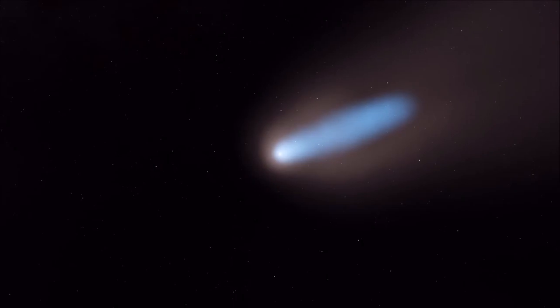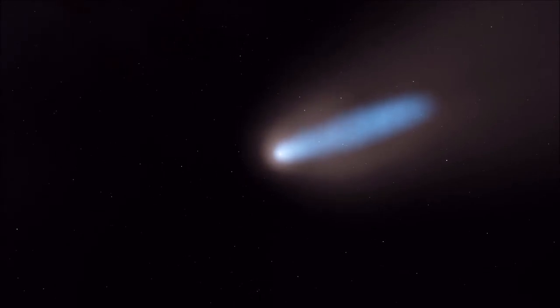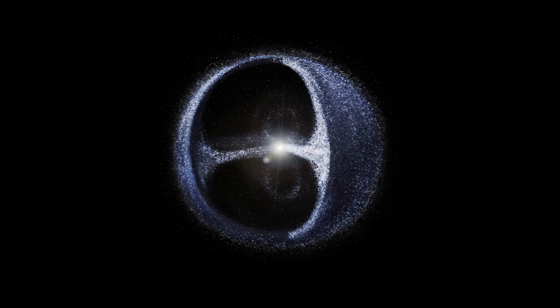The Oort cloud is home to longer period comets, as well as many asteroids and likely dwarf planets, but it is mostly made up of various types of ices.